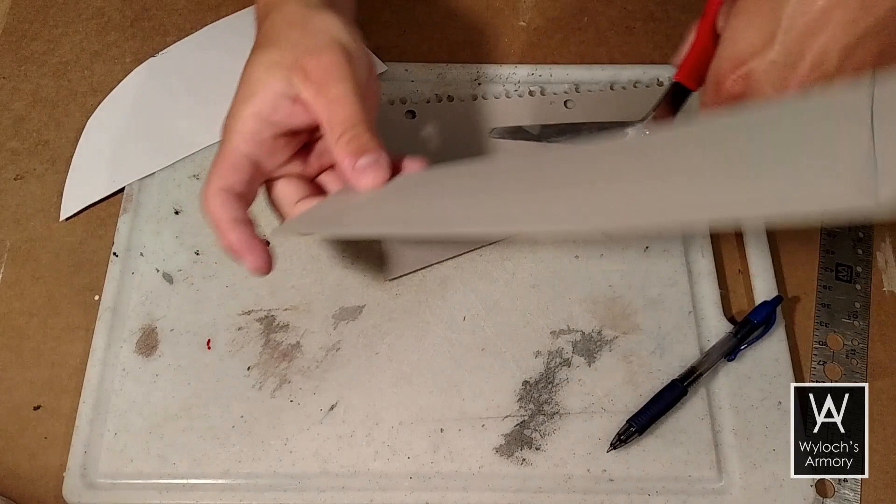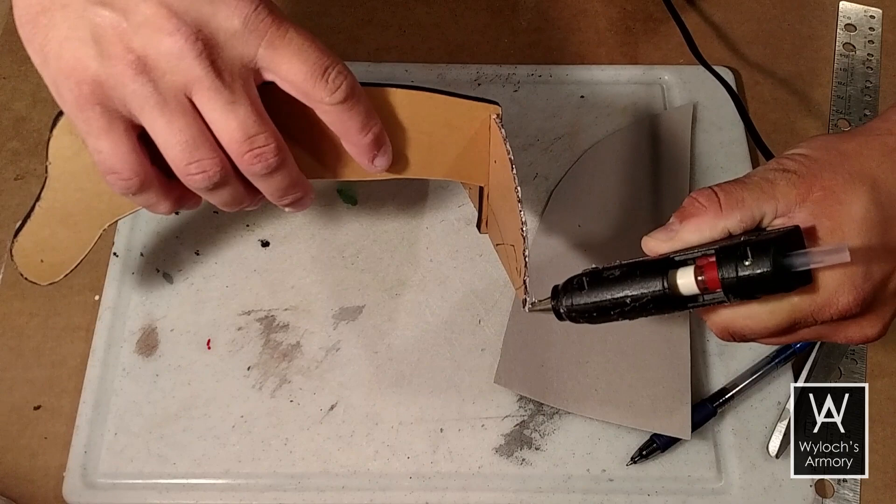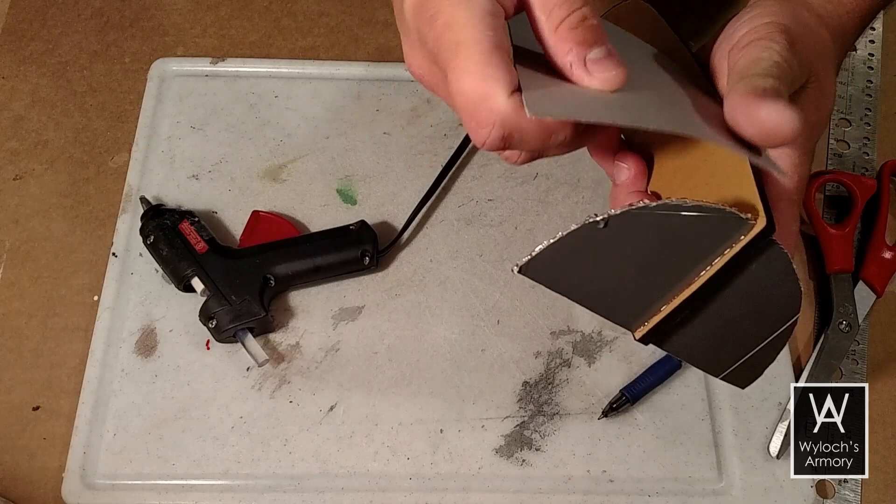Now, use the template for the sides, and cut out two of them, again from chipboard. Hot gluing them on can be tricky, so first, only do the back curve, where it joins the quarter circles that we just identified.